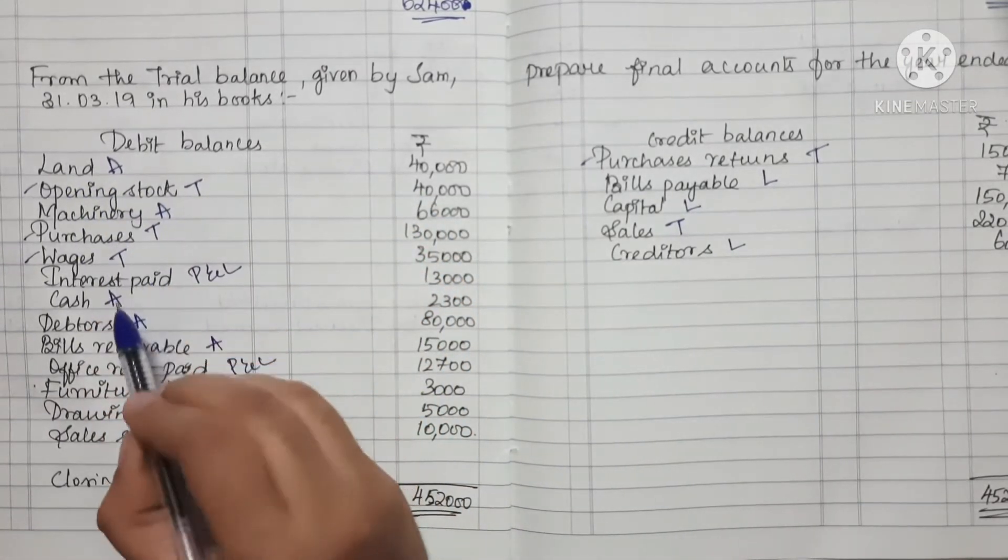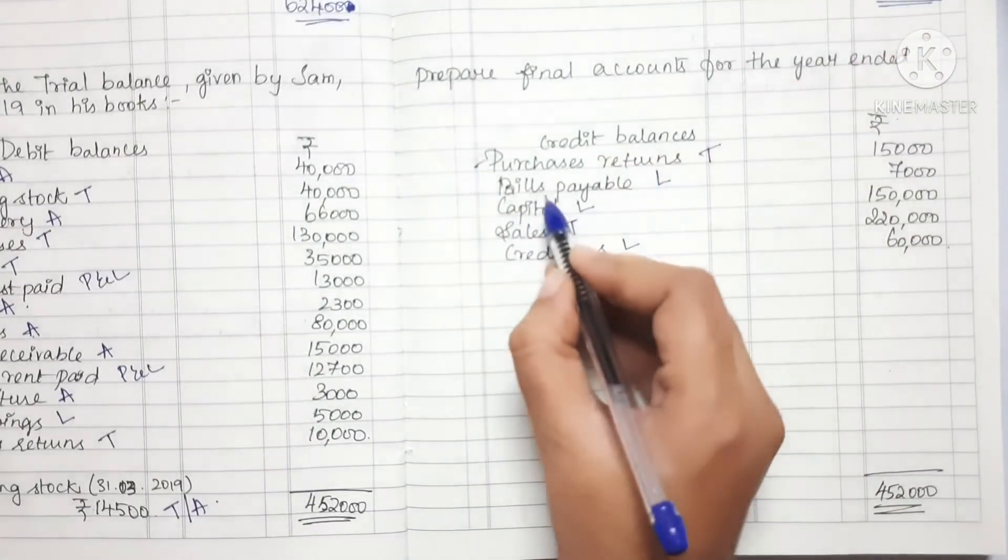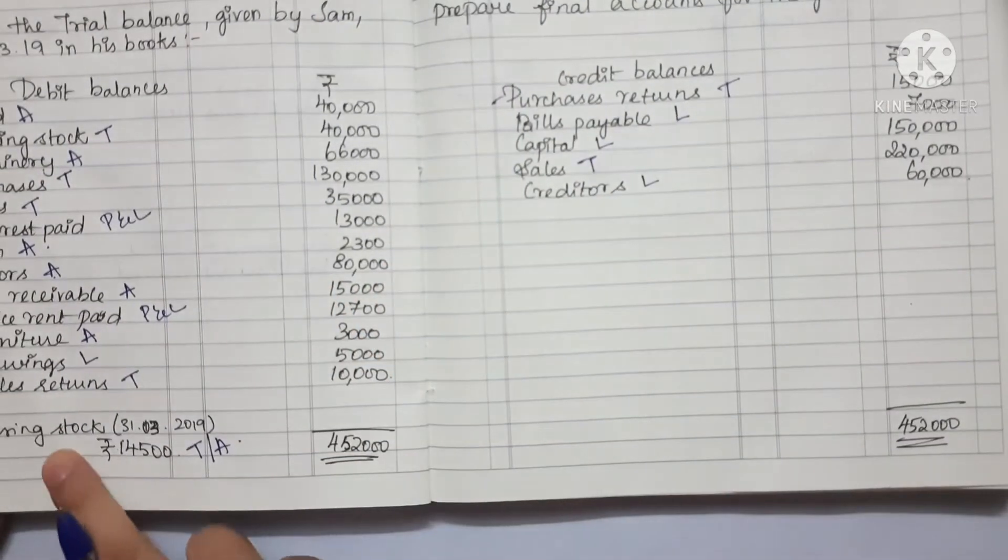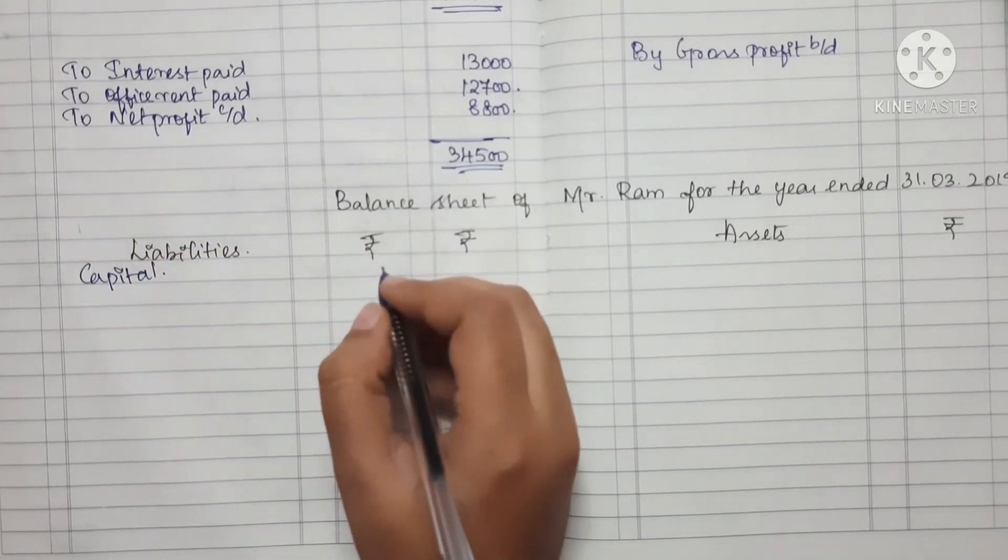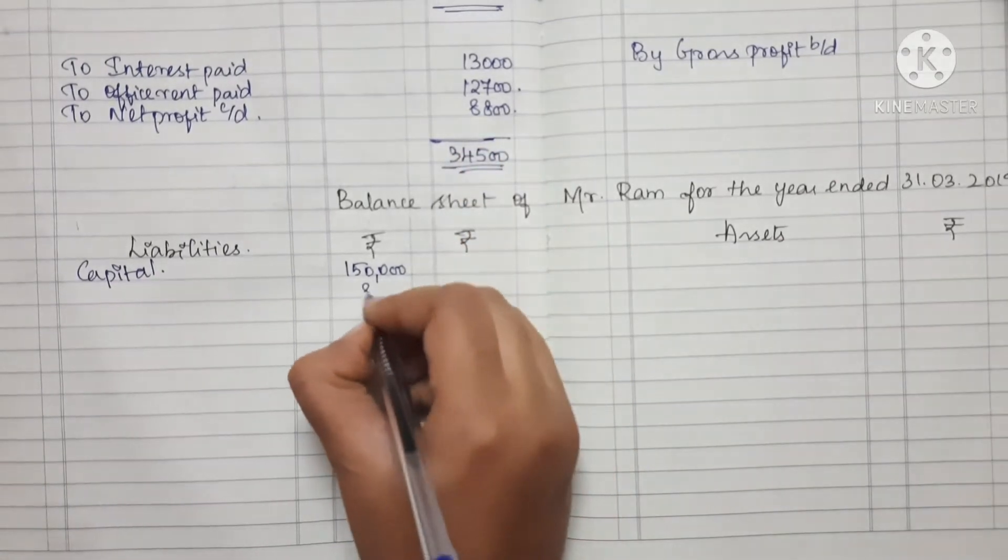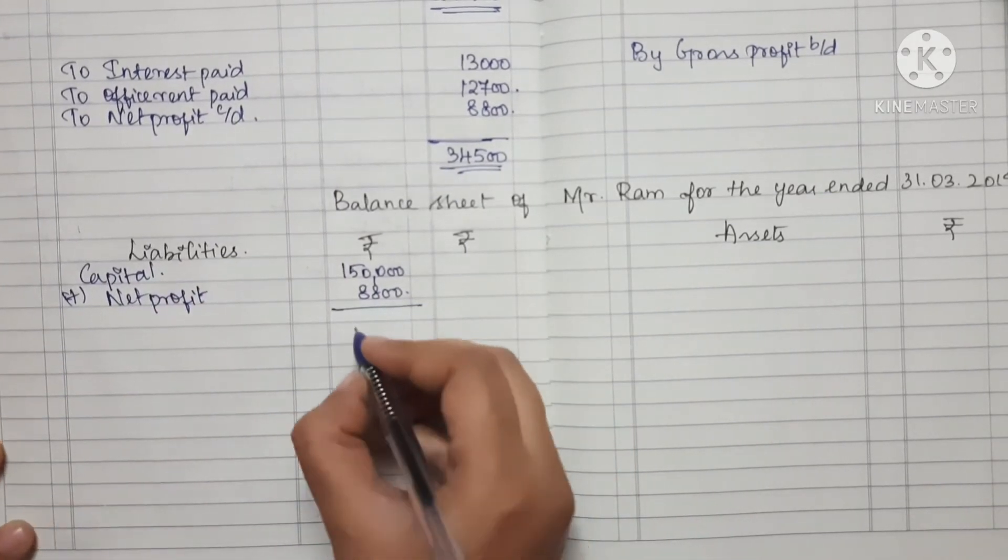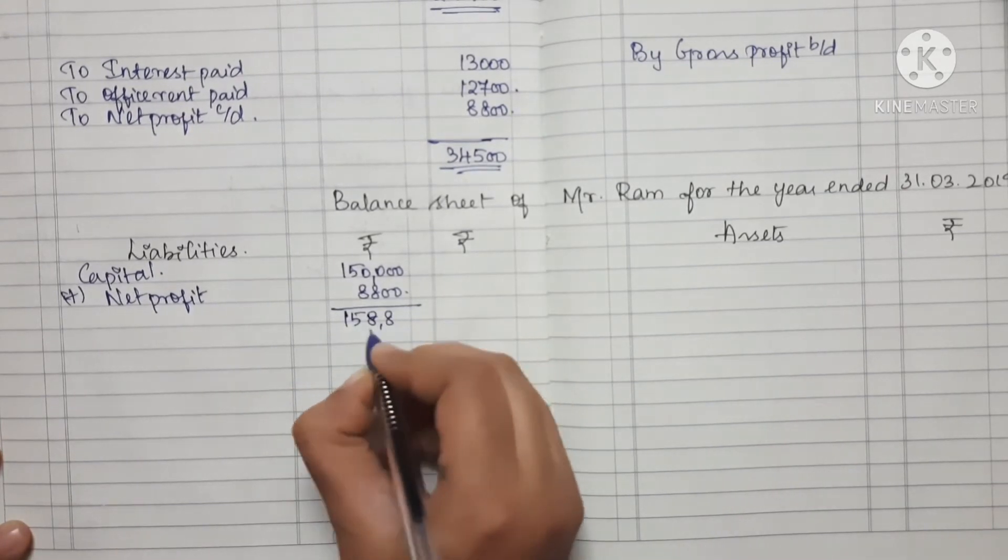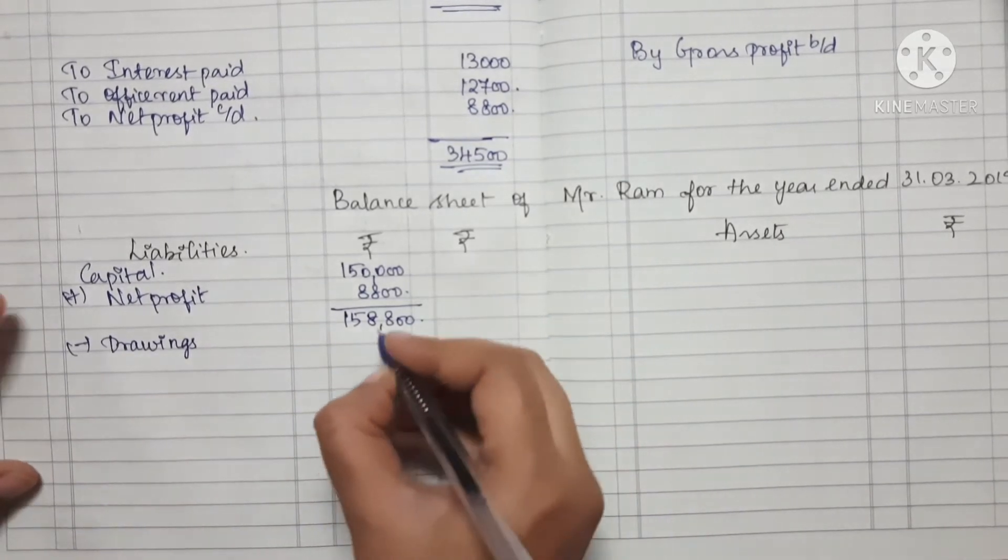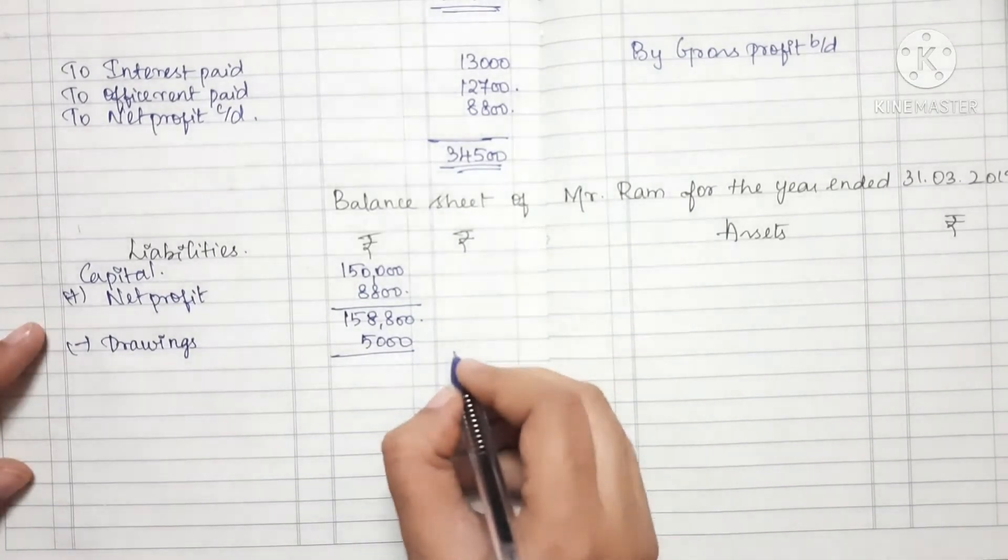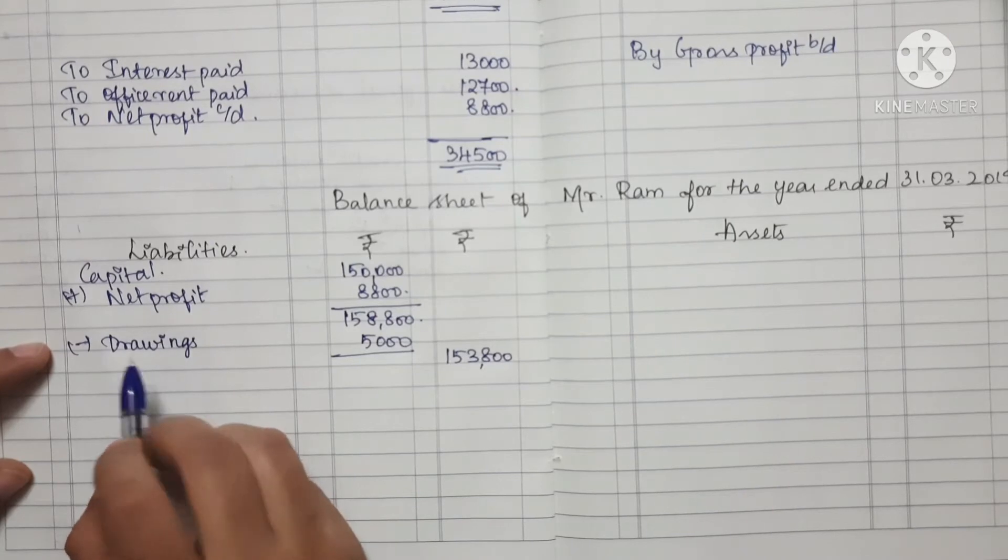Now we prepare the Balance Sheet. The items are: Land, Machinery, Cash, Debtors, Bills Receivable, Furniture on the assets side; and Drawings, Bills Payable, Capital, Creditors on the liabilities side. We also add Closing Stock. First, Capital: the amount is 1,50,000. Net profit of 8,800 is added.